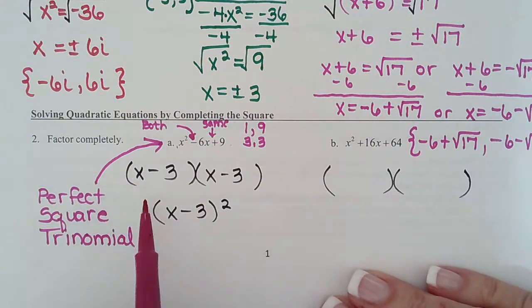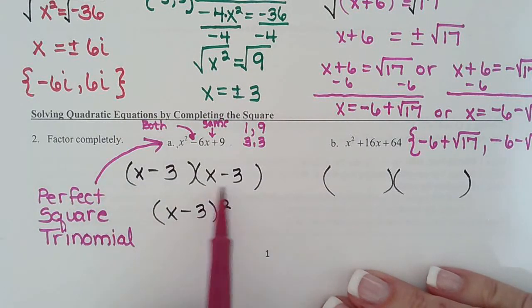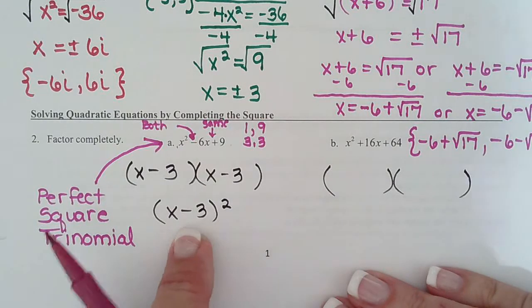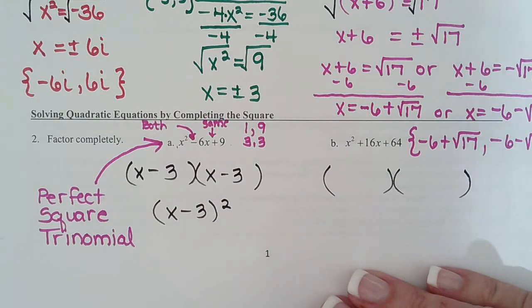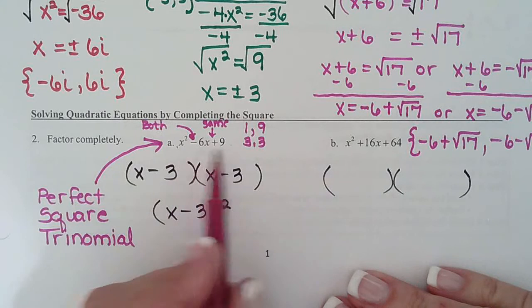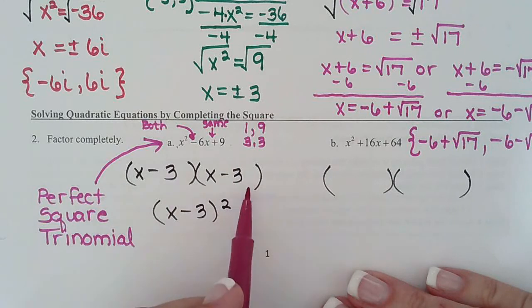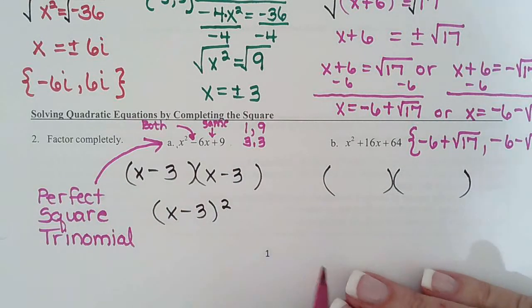Because that's going to be our goal when we start the second method of completing the square—we want to make a perfect square trinomial. Why? Because all perfect square trinomials have matching factors and can be written like this. Our goal at the end of completing the square is to do the square root property, so we need a squared quantity.